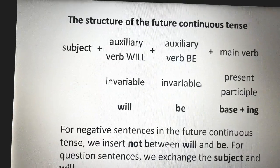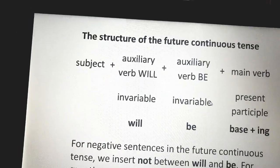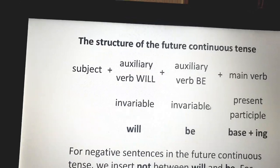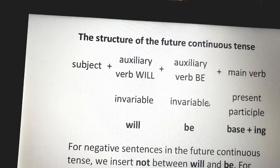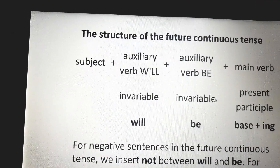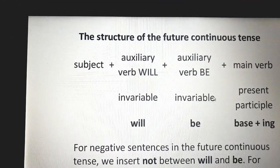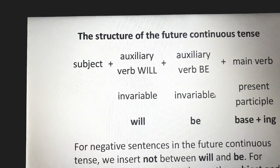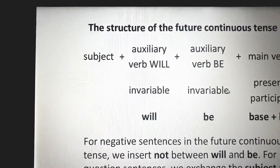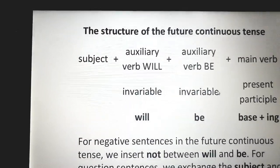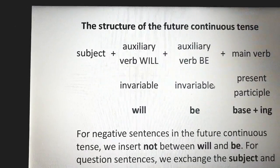The structure of the future continuous tense: when I want to build a sentence in the future continuous, for example I want to talk about something that will be in progress in the future, the most suitable structure is future continuous. Each sentence in English starts with a subject, followed by the auxiliary verb — also called the modal verb — 'will'. We all know that will, shall, and be going to are always followed by the base form of the verb.